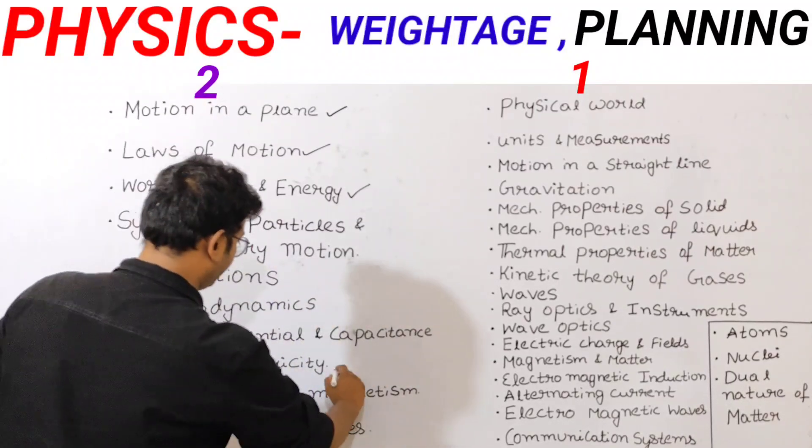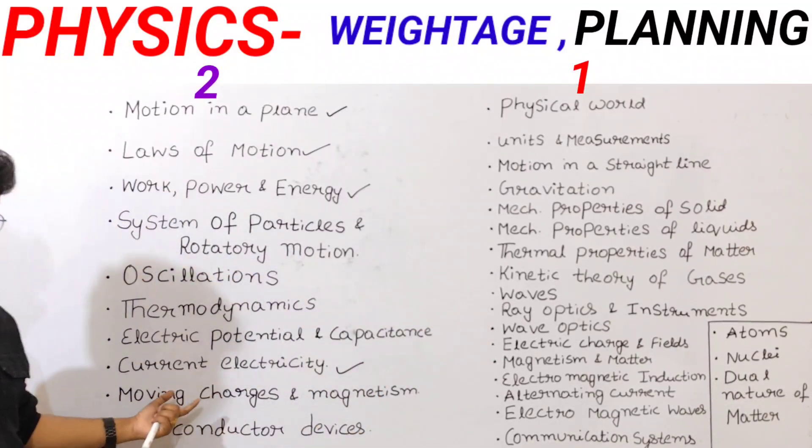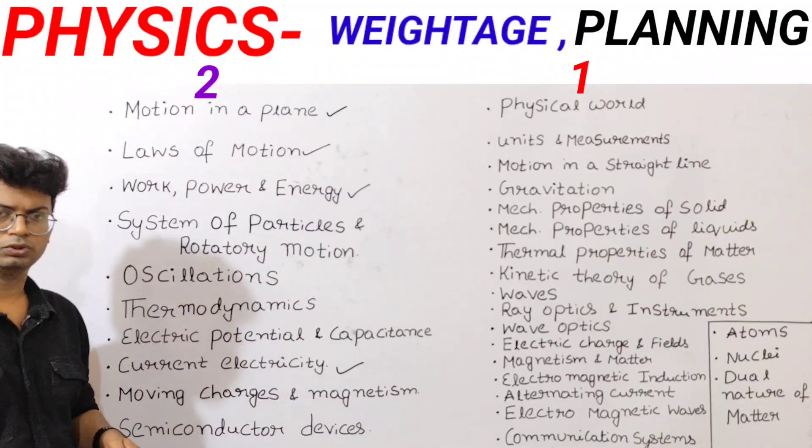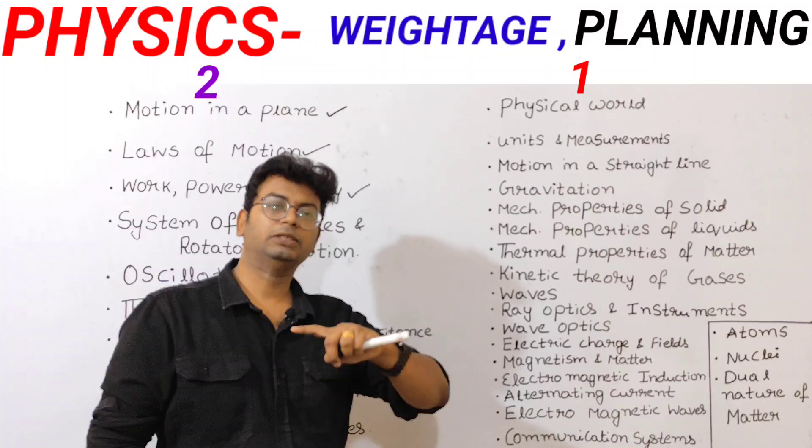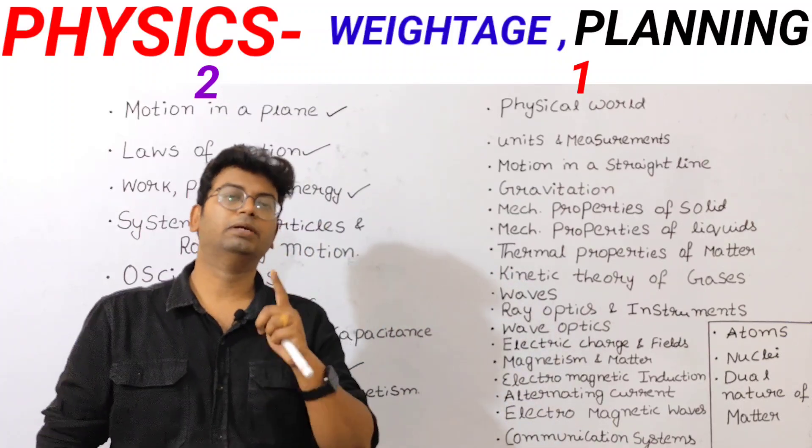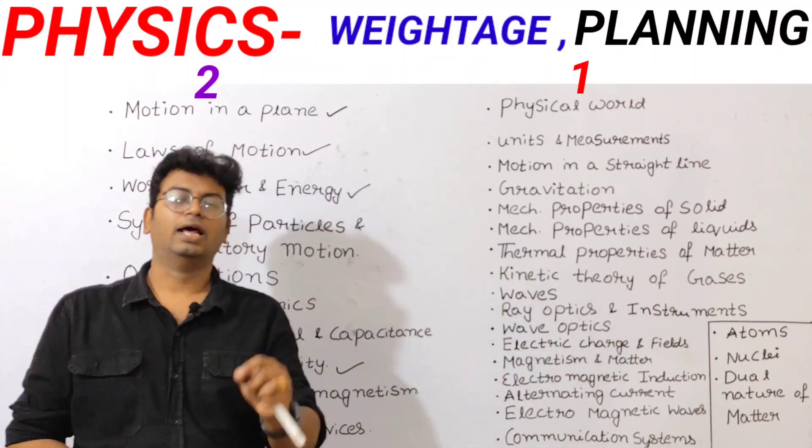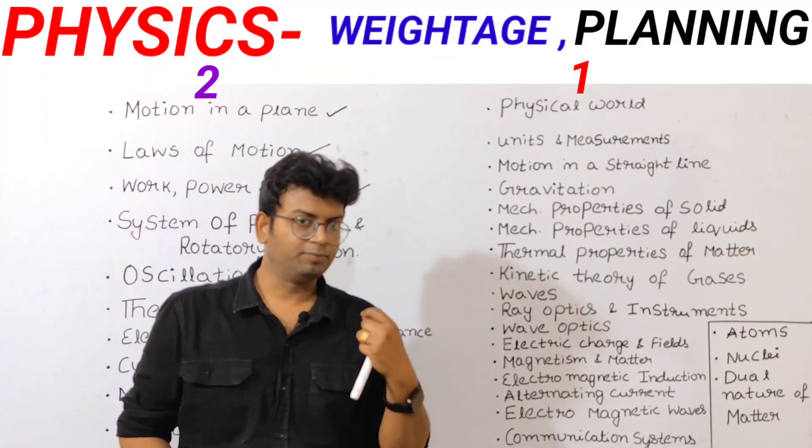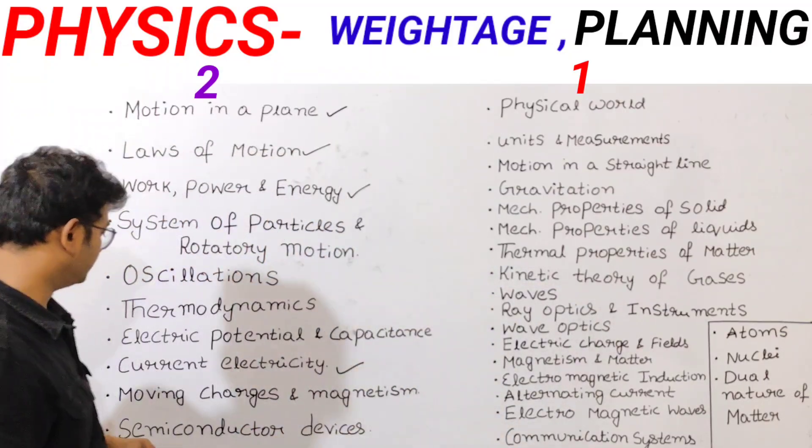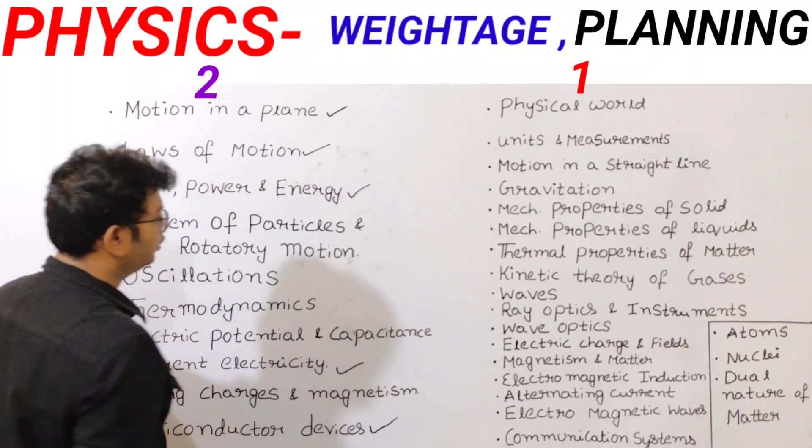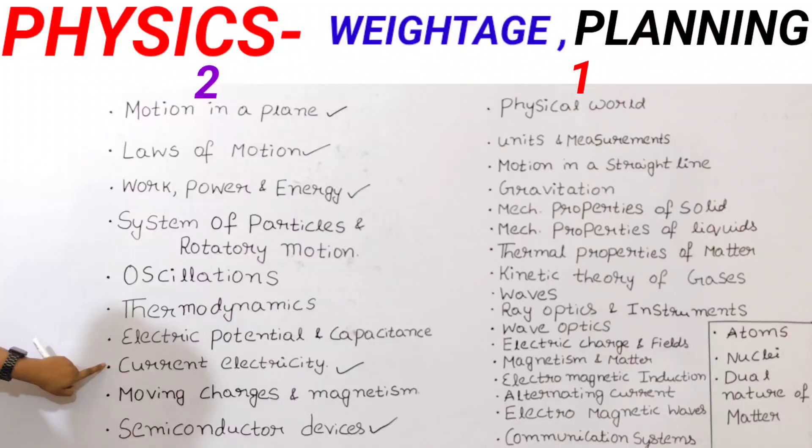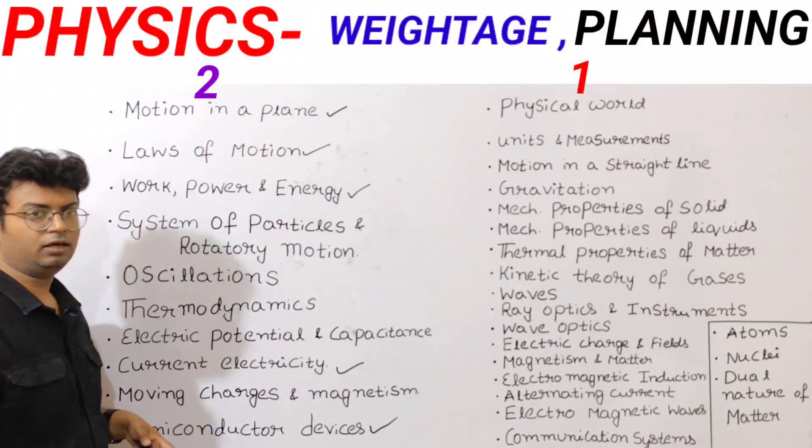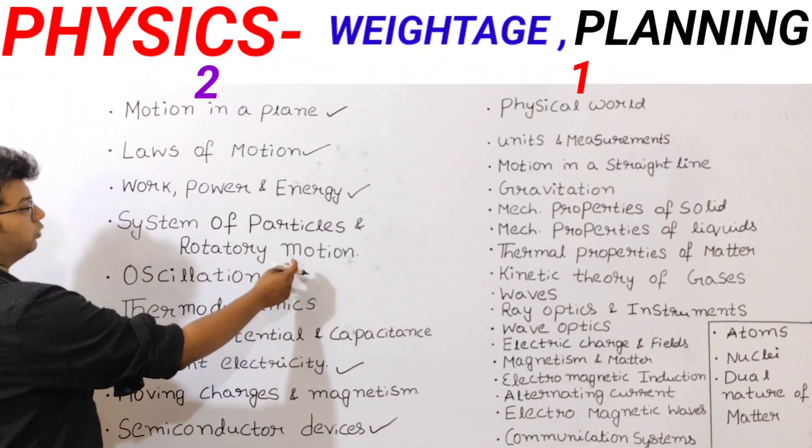And next, I will take a look at current electricity. Use the formula and use the M-set based formula. In my channel, use the M-set based formula. Subscribe to semiconductor devices. So both materials are useful. Let's get ready for motion in plane, laws of motion, work power energy, just use the semiconductor devices.